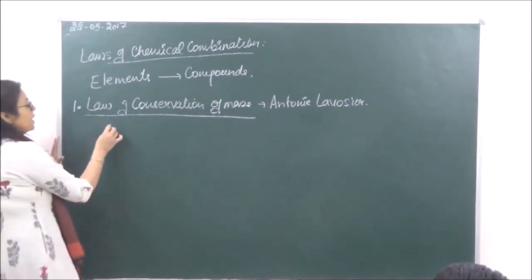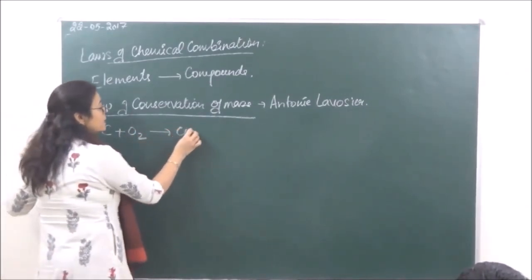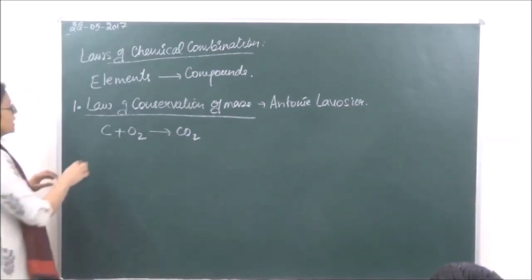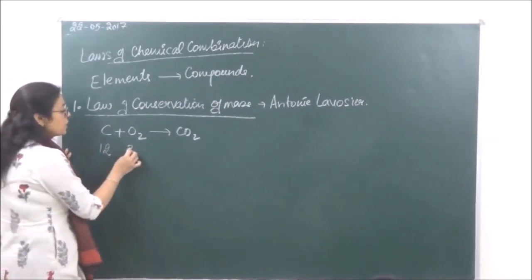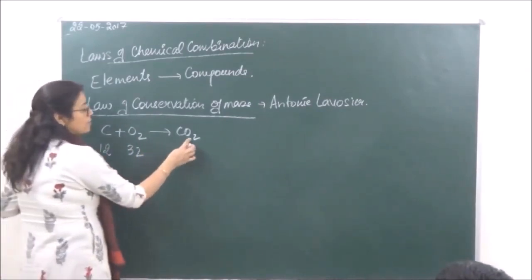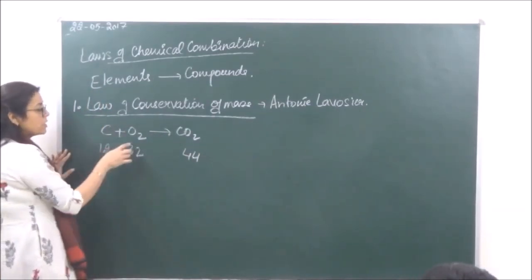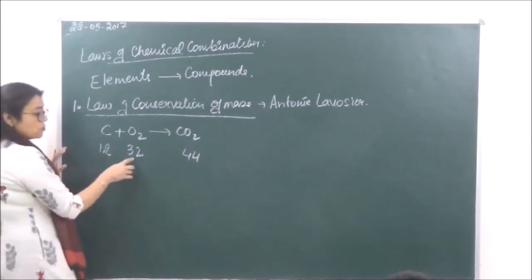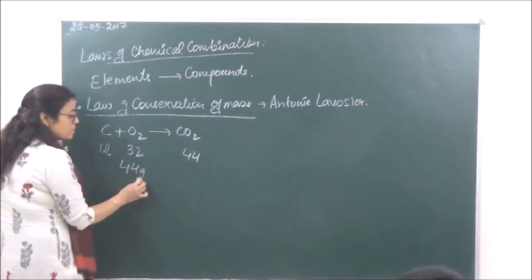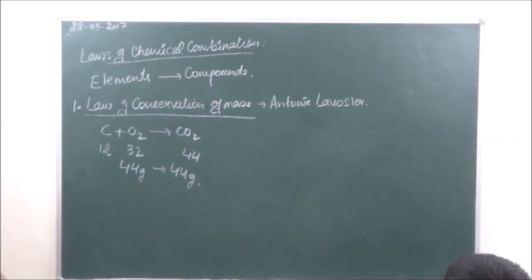For example, we take carbon and oxygen. These two combine to give carbon dioxide. The atomic mass of carbon is 12, oxygen is 32, and carbon dioxide's molecular weight is 44. According to the law, sum total mass of reactants equals sum total mass of products: 12 plus 32 equals 44, so 44 equals 44. This proves the law of conservation of mass.